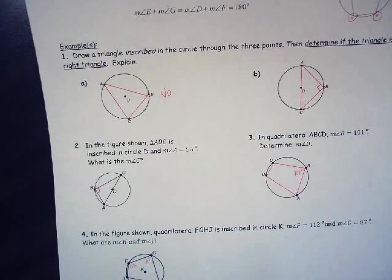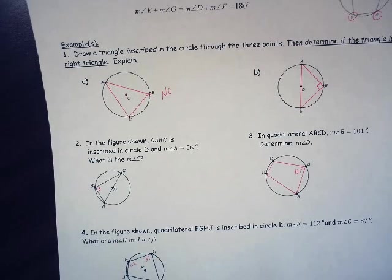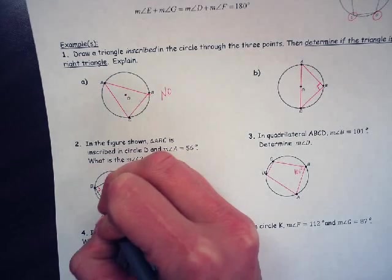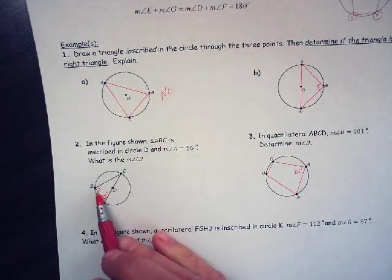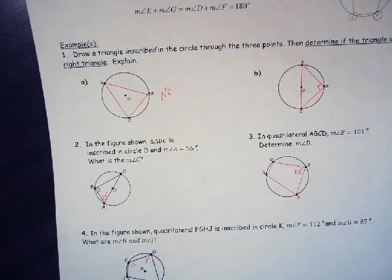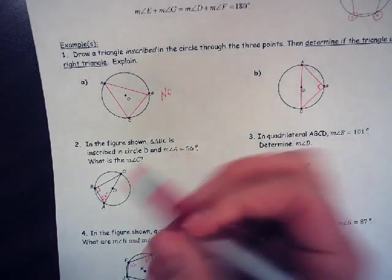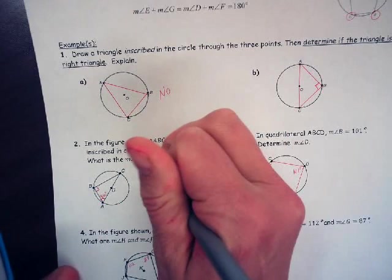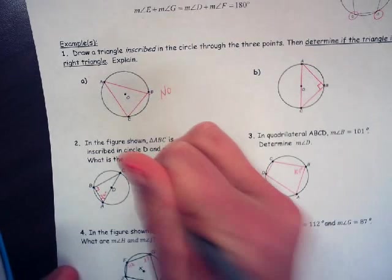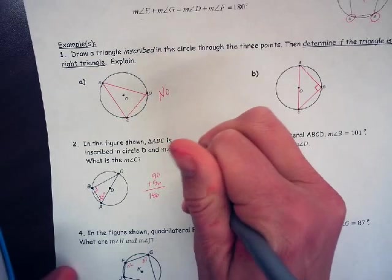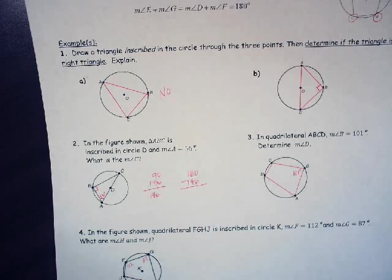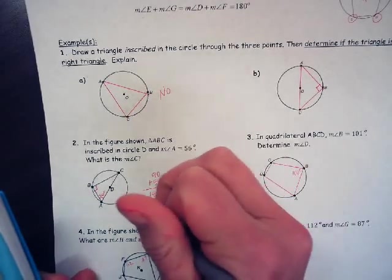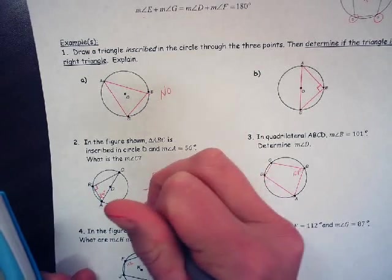Two. In the figure shown, triangle ABC is inscribed in circle D, and measure of angle A is 56. So this one right here is 56 degrees. What is the measure of angle C? Well, these all have to add up to be 180. So if I take 90 plus 56, that's this angle plus this one. 90 plus 56, I get 146. Angle C is going to be 180 minus 146, and that is 34. So the measure of angle C equals 34.